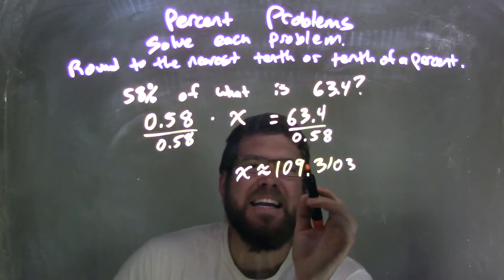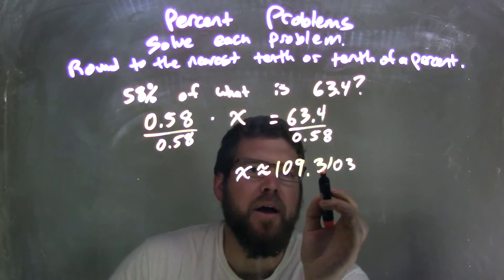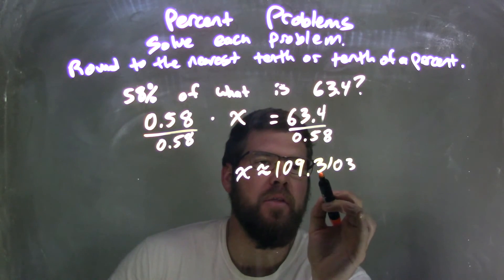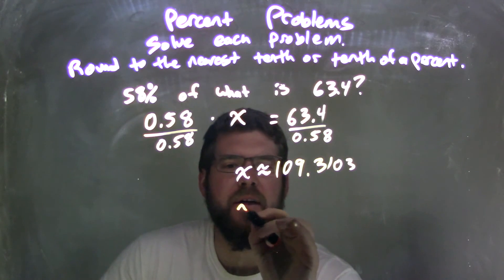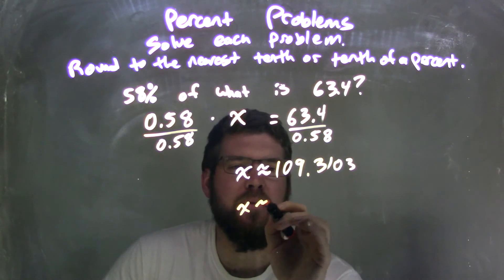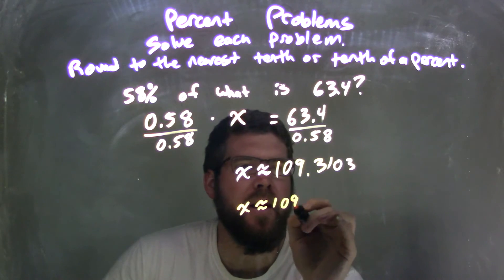So then from there, I need to find the rounding here. Look at the 3, look at the 1. The 1 causes the 3 to stay the same. So my final answer is really that x is approximately 109.3.